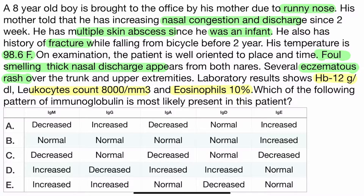The patient has had multiple skin abscesses since infancy, giving us three main symptoms: eczema, sinus/pulmonary infection, and skin abscesses. The most important finding here is the temperature — the patient has a normal temperature. Normally, a skin abscess would cause increased temperature and fever, but in this case the temperature is normal. That is the cold abscess.